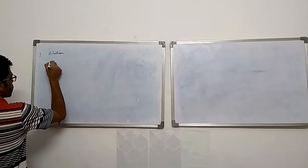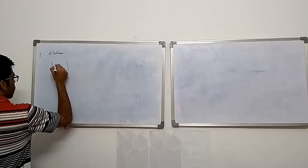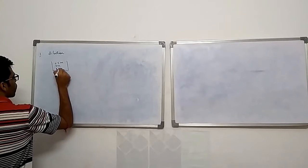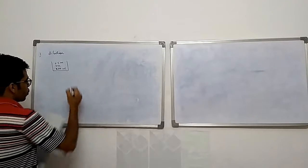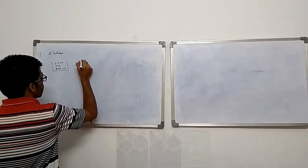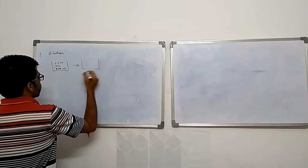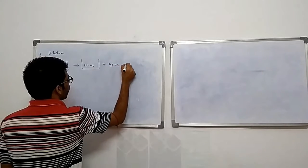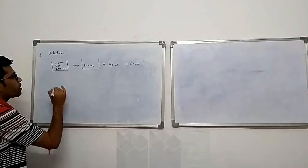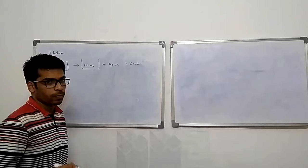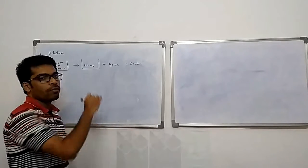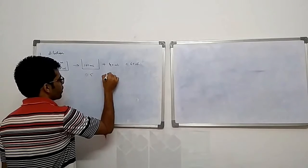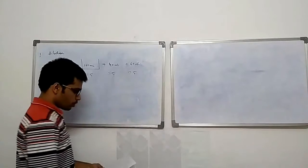Suppose we have a solution which is 0.5 molar HCl and it is 200 ml. You are dividing it into three parts: 100 ml, 40 ml, and 60 ml. When you divide a solution, the concentration doesn't change because the concentration is uniform throughout. So the concentration remains as 0.5 in each part.